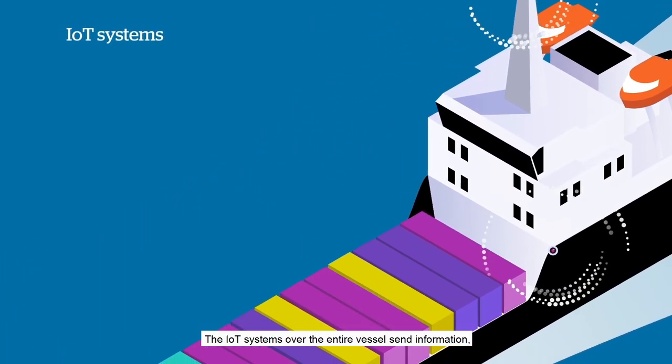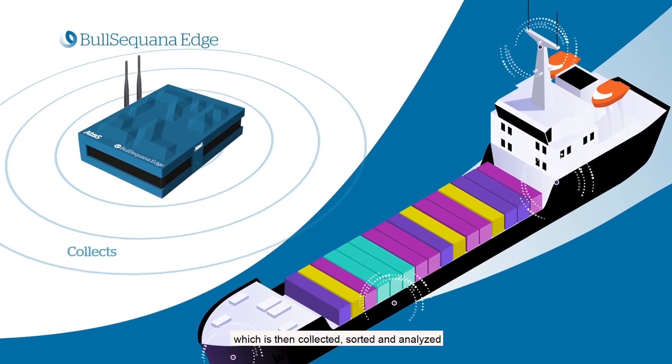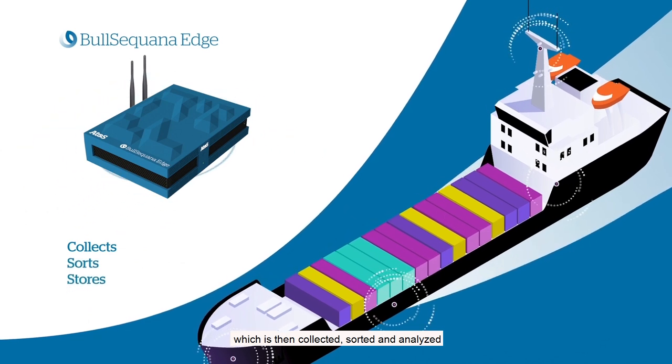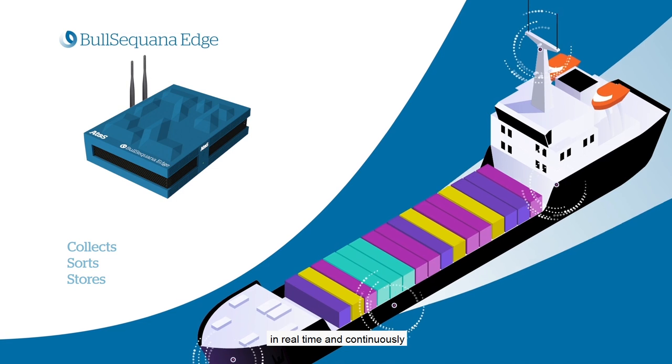The IoT systems over the entire vessel send information, which is then collected, sorted, stored, and analyzed in the BullSequana Edge server in real time and continuously.